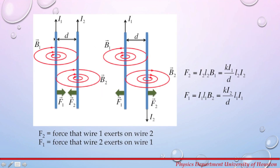If we have two wires at a distance d from one another, with the current in both wires in the same direction, using the right-hand rule we can determine the direction of the magnetic fields B1 and B2. For this particular example, they are in the same direction since the currents are in the same direction. The force F2 that wire 1 exerts on wire 2 is given by F2 = I2 L2 B1 sinθ, where sinθ equals 1 since the current I2 is perpendicular to the magnetic field B1.